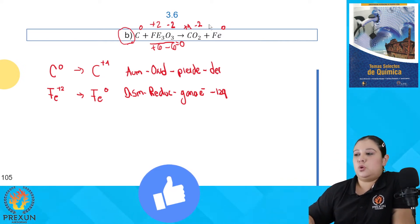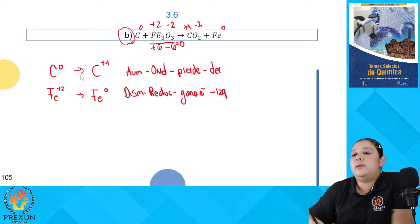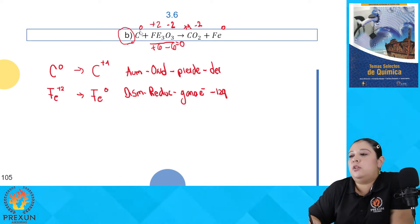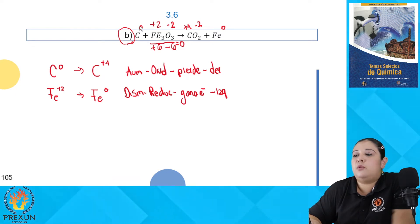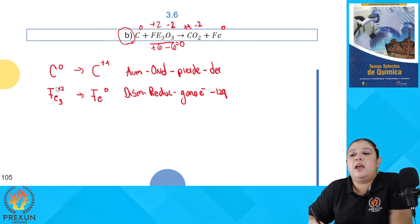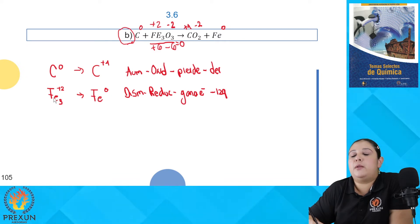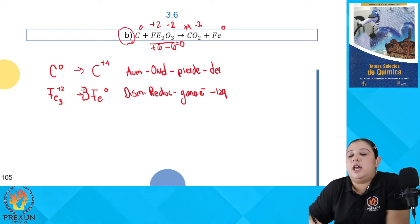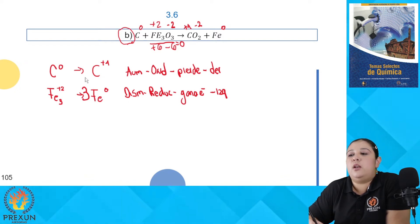Antes de escribir los electrones, debemos balancear la masa. Tenemos un carbono de cada lado, eso está balanceado. Para el hierro, la fórmula indica 3 hierros en el reactivo (Fe₃) pero solo un hierro en los productos, así que necesitamos un coeficiente de 3 del lado de los productos. Ya tenemos balanceada la masa: un carbono, un carbono; tres hierros, tres hierros. Ahora procedemos a escribir los electrones.